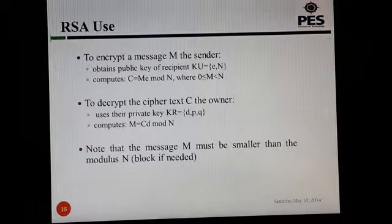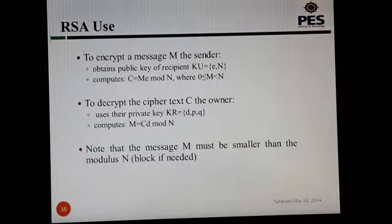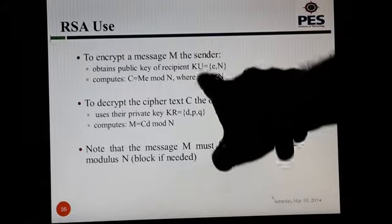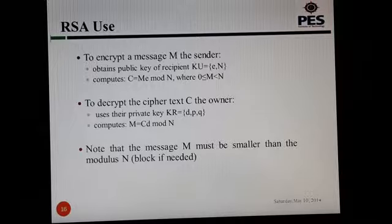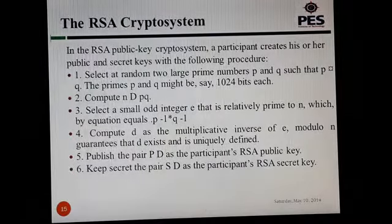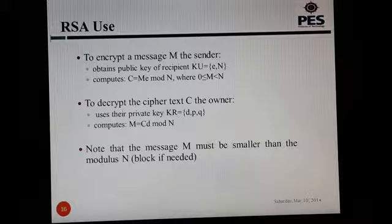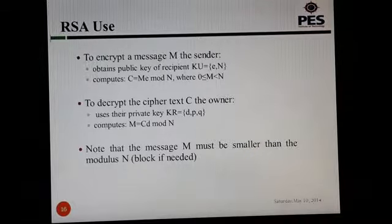To encrypt a message m, the sender obtains the recipient's public key (e, n) and computes ciphertext c = m^e mod n, where the message m must satisfy 0 ≤ m < n. Here we are multiplying m raised to e and finding the modulus with n, and that gives us c, which is the encrypted ciphertext. This ciphertext is then transmitted through the channel.